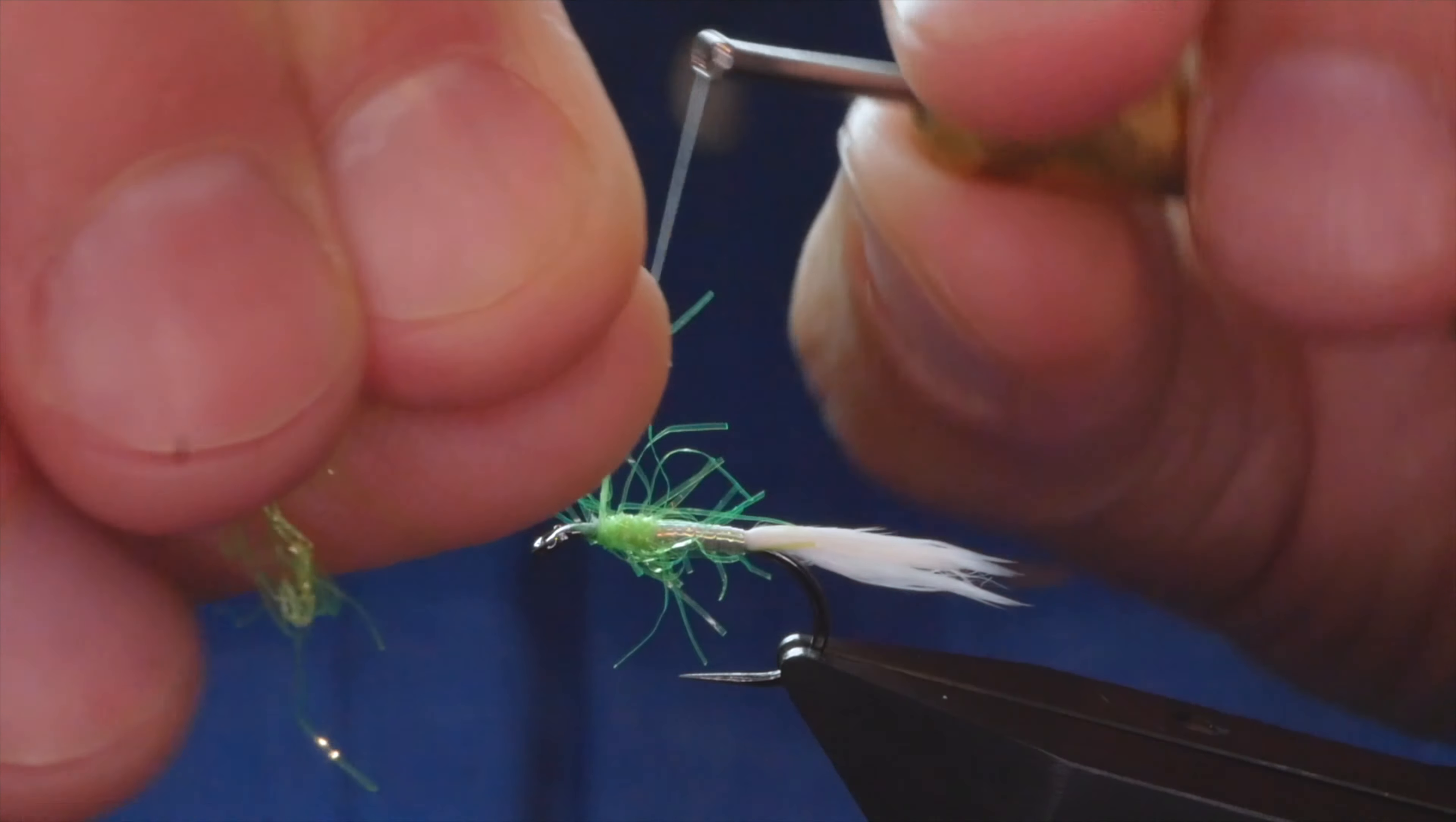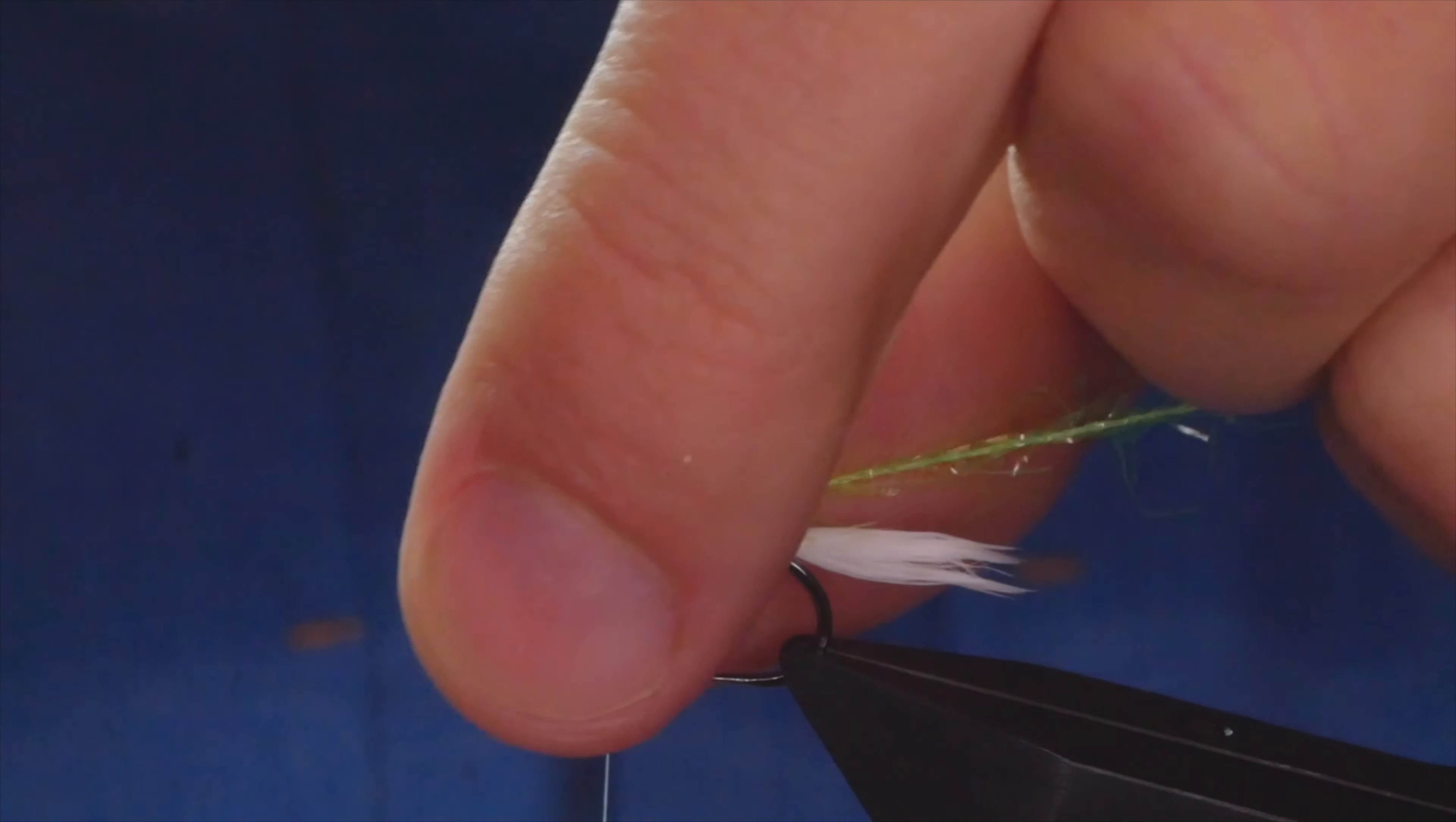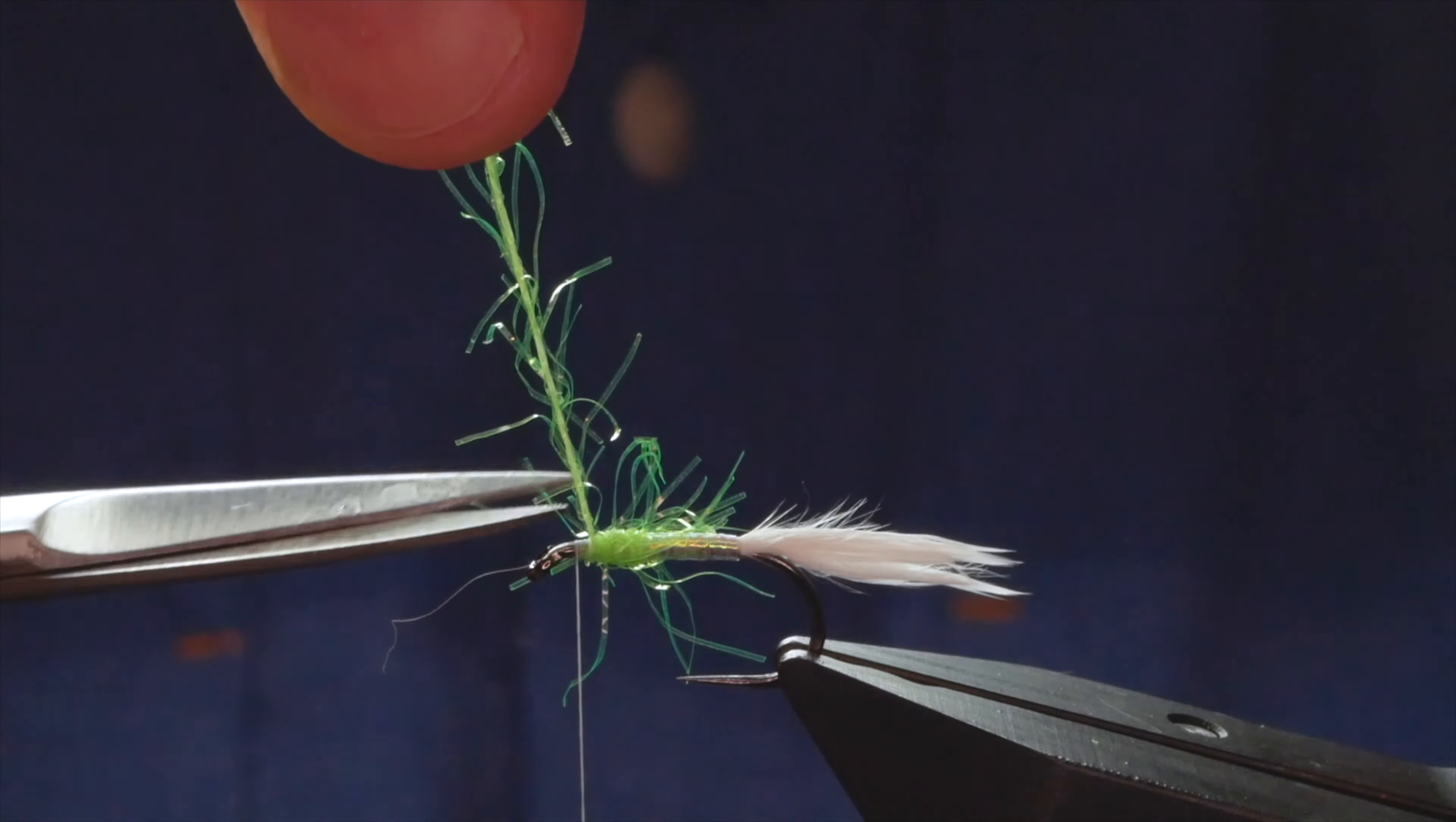I'm content that that's enough. I'm going to come in now and trap it into place with two or three turns. With my thumb and forefinger, I'm going to pull all them bits back. Then I can catch that in. Come in with your snips and remove your waste.